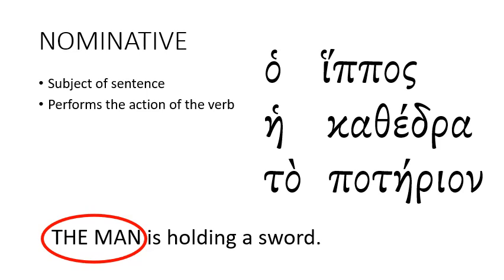This is a quick review of the different cases in the Greek language. The first case is the nominative case. The nominative case is used when a word is the subject of a sentence — it performs the action of the verb. So in the sentence 'the man is holding the sword,' the man is in the nominative case.